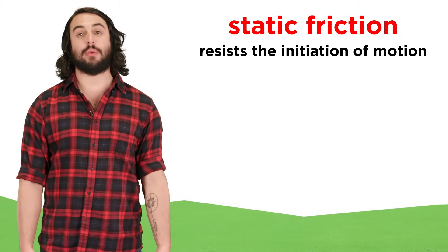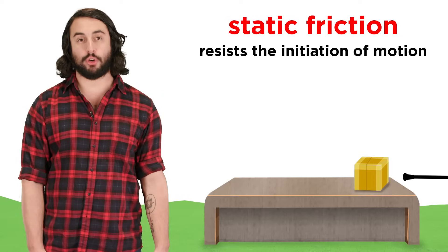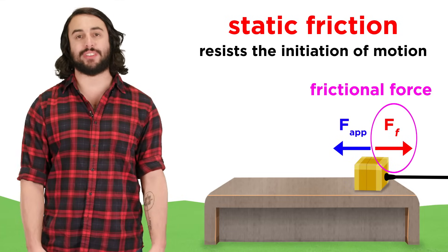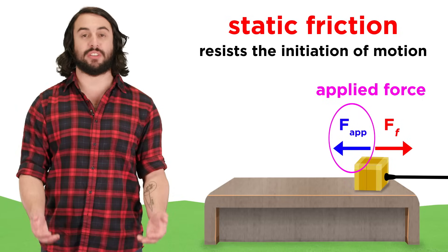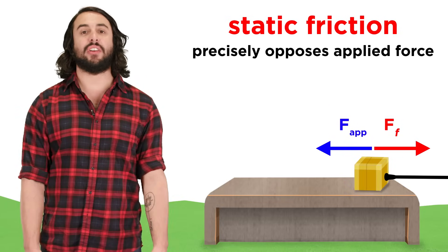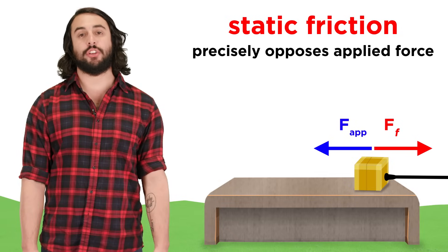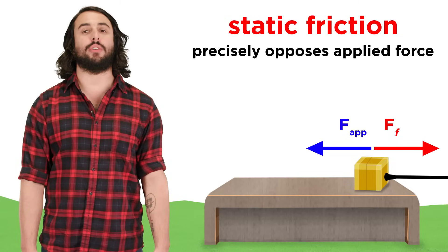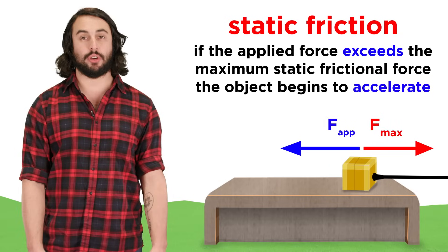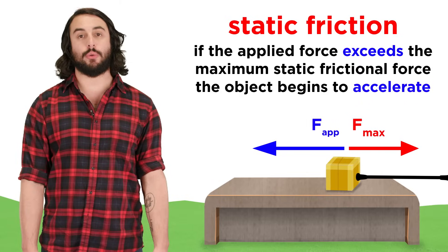Static friction is the friction that resists the initiation of motion. If you place a block on a table and try to very lightly push it into motion, it will first resist that motion because of the frictional force operating in the direction opposite the applied force of your push. You can push harder and it will still remain still, because the frictional force will always precisely oppose the applied force. Static friction will increase until the magnitude of the applied force exceeds the maximum static frictional force the table can exert. Then the force of the push can no longer be canceled out, and the block will begin to accelerate.